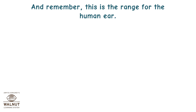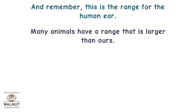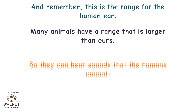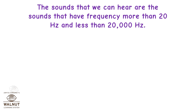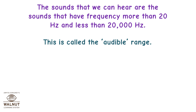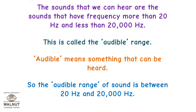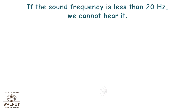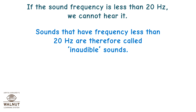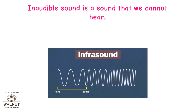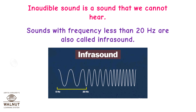Remember, this is the range for the human ear. Many animals have a range that is larger than ours, so they can hear sounds that humans cannot. The sounds we can hear have frequency more than 20 Hz and less than 20,000 Hz — this is called the audible range. Audible means something that can be heard. If the sound frequency is less than 20 Hz, we cannot hear it. Sounds with frequency less than 20 Hz are therefore called inaudible sounds.